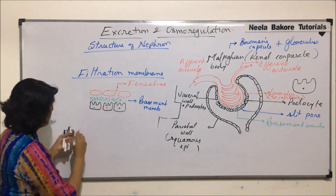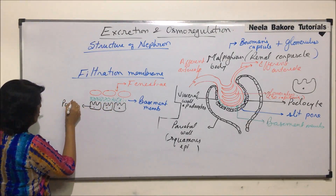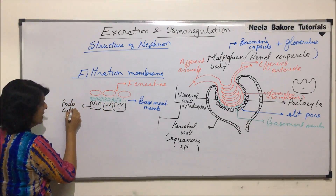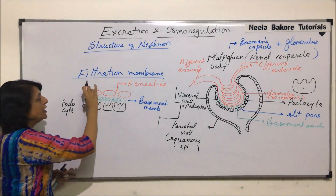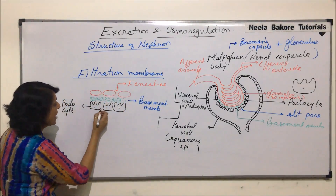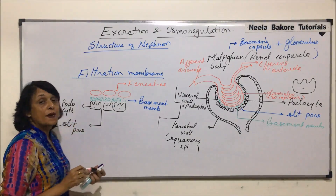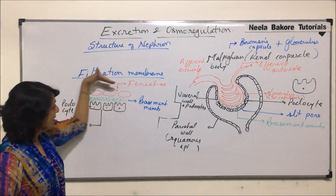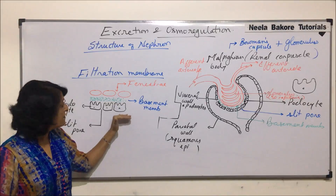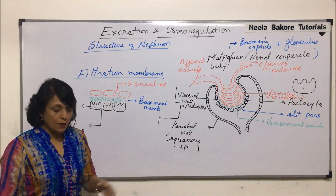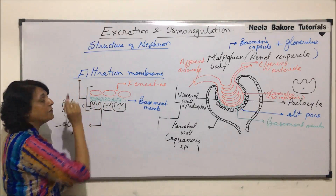Then there is a basement membrane and podocytes. The layer made up of podocytes is the visceral layer. These are the capillary networks and this is the slit pore. Filtration takes place through the capillary layer, then through basement membrane, and then through the visceral layer which is made up of the podocytes. These three together form the filtration membrane.